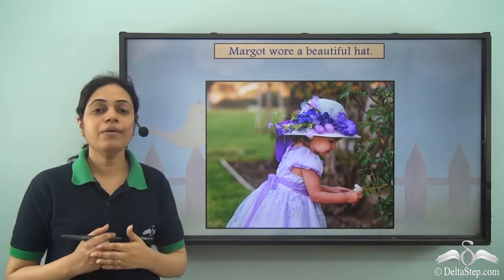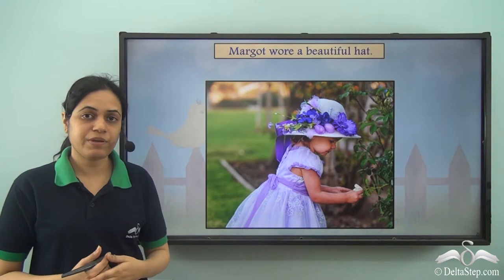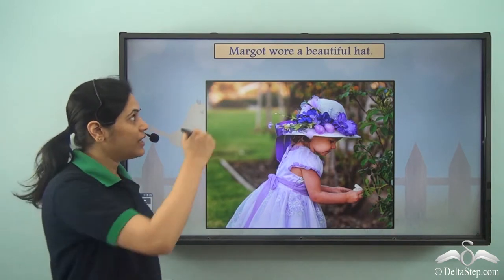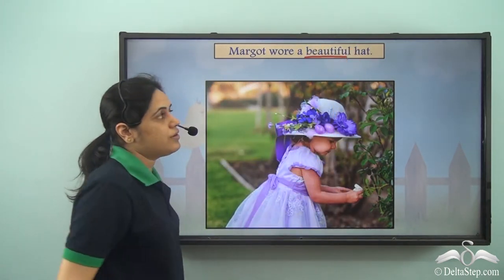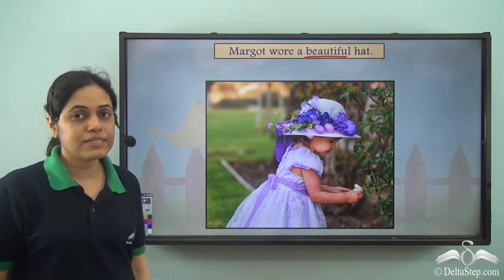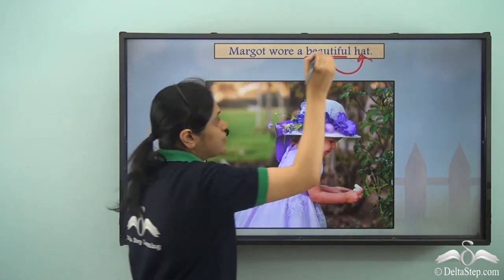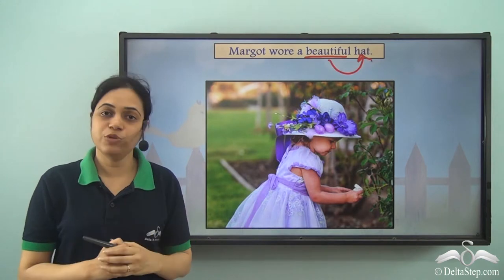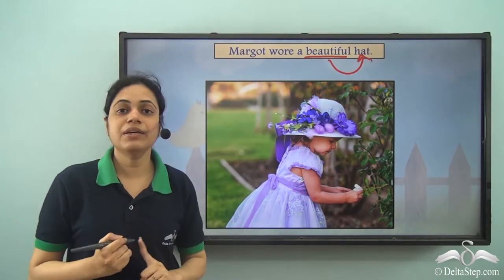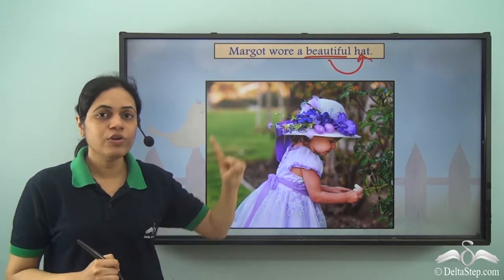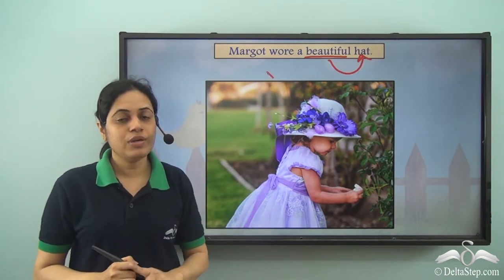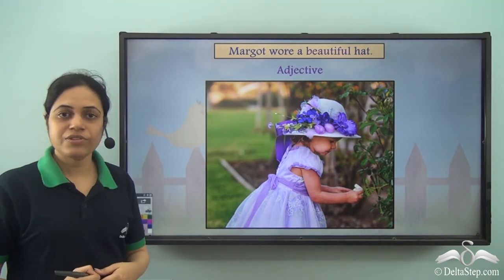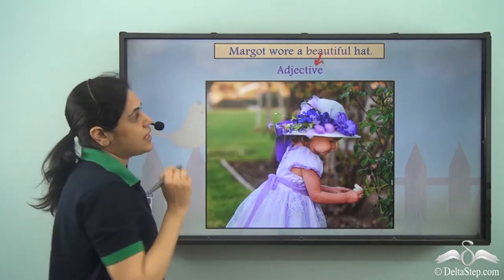'Margot wore a beautiful hat.' What is the describing word, and is it an adjective or an adverb? Beautiful is the describing word — it tells us what kind of hat it is. What kind of hat? Beautiful. So beautiful is describing the noun hat. Words that describe a noun are adjectives, so beautiful is an adjective.